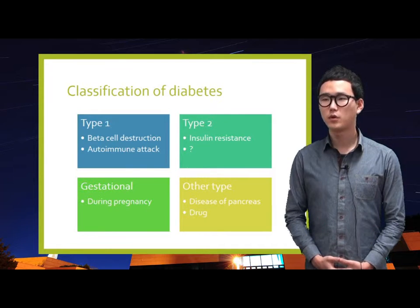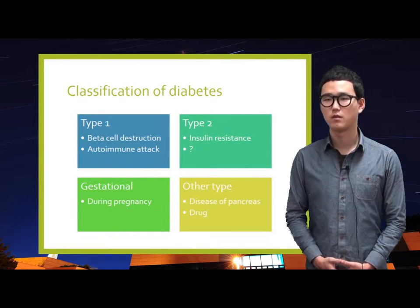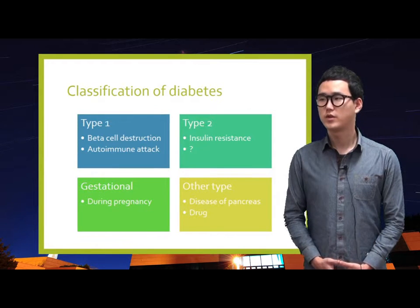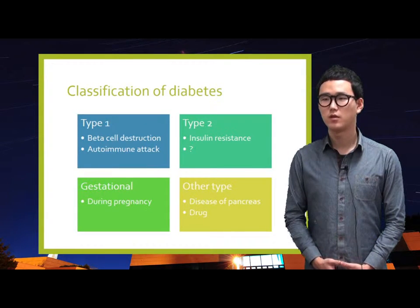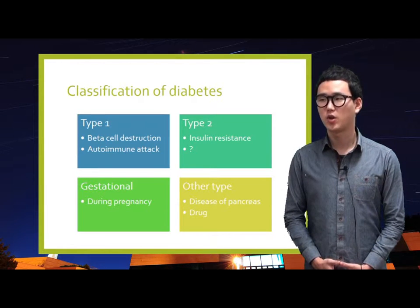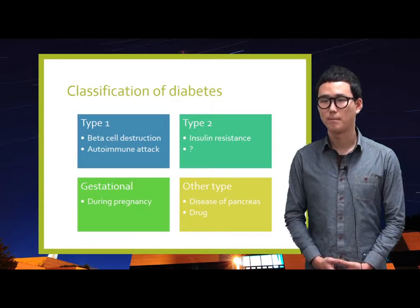There are four types of diabetes, classified by the cause. Type 1 diabetes results from beta cell destruction, leading to absolute insulin deficiency, mostly due to T cell-mediated autoimmune attack. It accounts for approximately 10% of diabetes cases in North America and Europe.